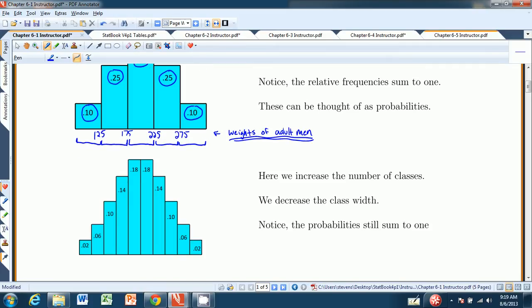But the relative frequencies, or the probabilities, if you were to add all of these up, they would still add up to 1. So that's pretty important. You've got to keep that in mind. So these still sum to 1.